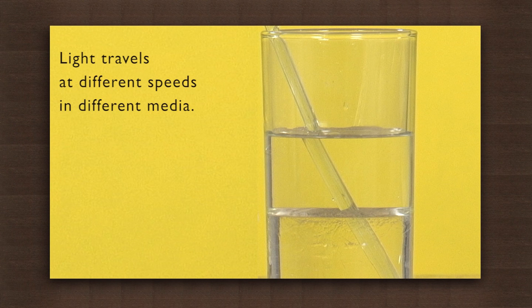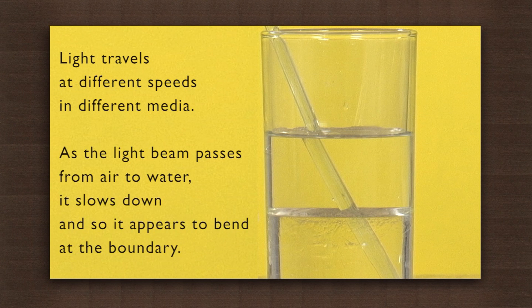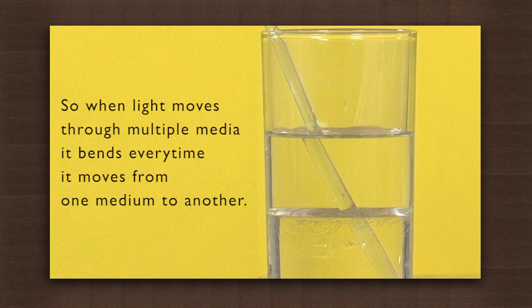This is because light travels at different speeds in different media. As the light beam passes from air to water, it slows down and so it appears to bend at the boundary. So when light moves through multiple media, it bends every time it moves from one medium to another.